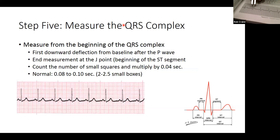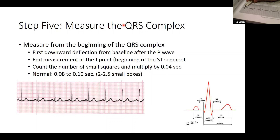For the QRS complex, we measure from the deflection on one side to the deflection on the other side — the J point. Counting the small squares within the large boxes, we get two and a half squares, which equals 0.10 seconds — the upper limit of normal. So this strip reads as a normal sinus rhythm at 60 beats per minute, with a PR interval of 0.14 seconds and a QRS of 0.10 seconds.